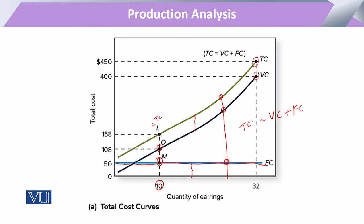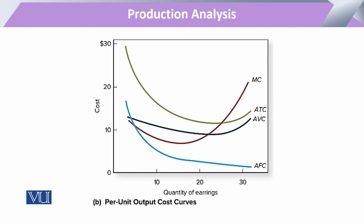These are the total cost curves, and likewise we can also draw average cost curves. The average fixed cost curve exhibits an L-shaped curve, as the fixed cost remains constant. When we divide it by units of output, it will be steeper in the start and at the end it will be close to the x-axis. But it will never become zero, because fixed cost is never zero. Since the numerator is not zero, there is no possibility that the average fixed cost curve will become zero.